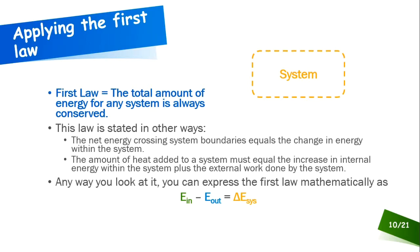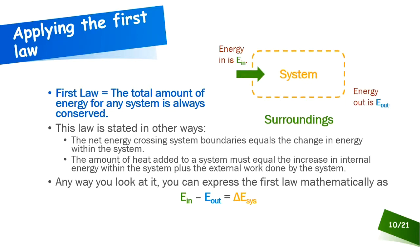Any way you look at it, you're talking about conservation of energy — energy in, energy out, and a change of energy within the system. The difference between what goes in and what comes out equals the change of energy within the system, since the total amount of energy is always conserved. With a system defined by a yellow dashed line on screen, the surroundings are everything outside it.